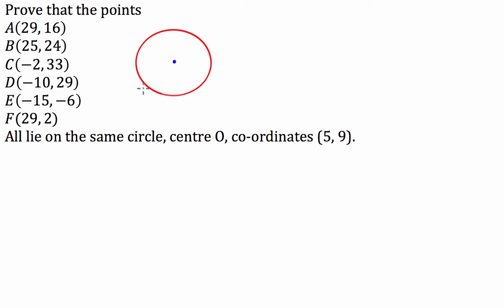G'day guys, we've got a coordinate geometry question here for you today where we've been asked to prove that the points A, B, C, D, E and F all lie on the same circle, centre O, with coordinates 5, 9.